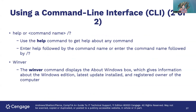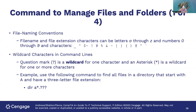You can get help by typing 'help' or using the command followed by /?. The Winver command gives you the About Windows box — it provides information on the Windows edition, the latest updates installed, and the registered owner of the computer.